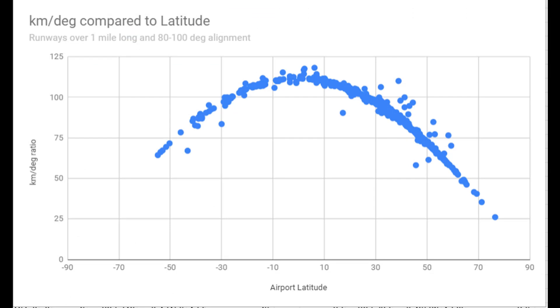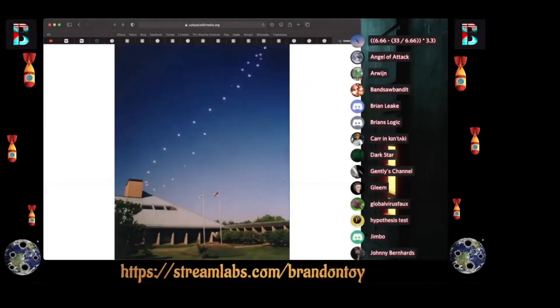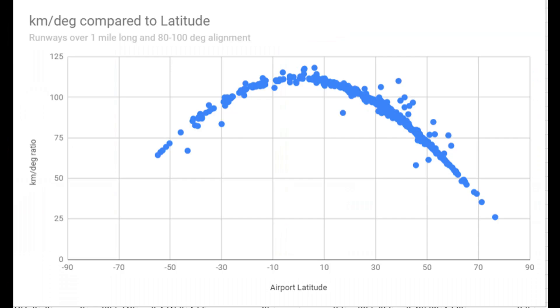So then to verify the method, and perhaps rub salt into flatties' wounds—yes, definitely to do that—I rotated the whole thing by 90 degrees and did it all again. This time picking runways with angles between 170-190 degrees, so basically north-south runways, and I got about 500 of those.